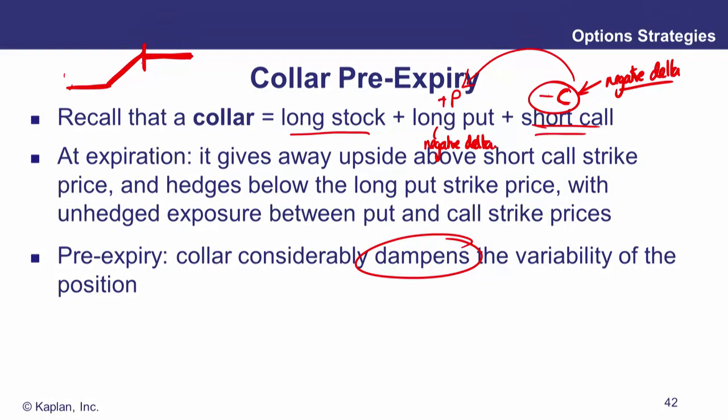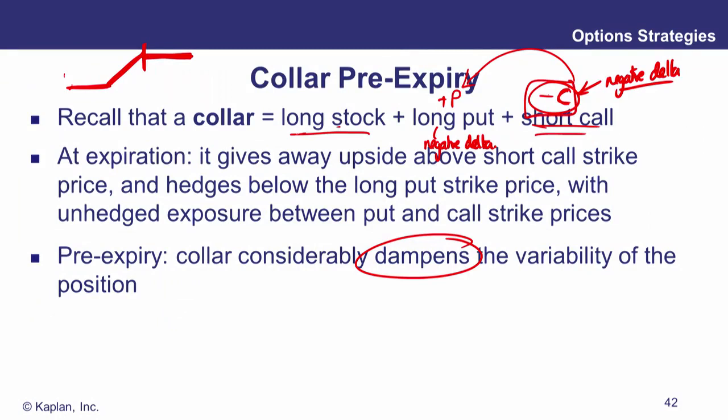When the underlying rises significantly, the short call's delta expands toward minus one — because you're short it — and negates your long stock delta, again leaving you with near-zero exposure. So the collar caps both upside and downside through delta cancellation.